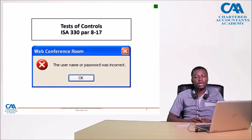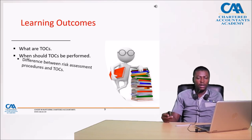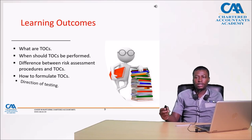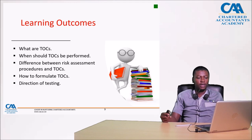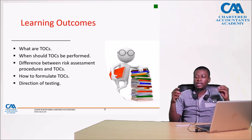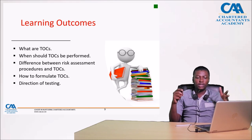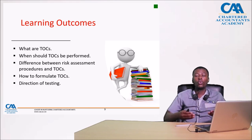So what are the learning outcomes from this session? We need to know what TOCs are, what we are trying to achieve, what type of analysis is involved, and when we even think about testing controls. We'll also differentiate between risk assessment procedures and test of control procedures, and how to formulate test of control procedures, which is normally expected in an examination context.